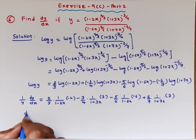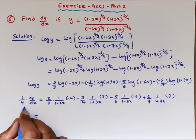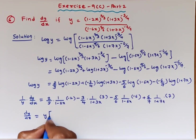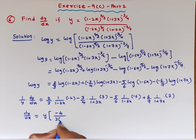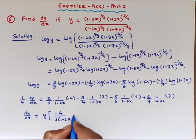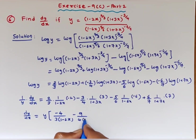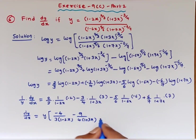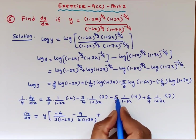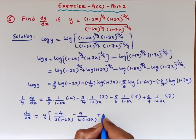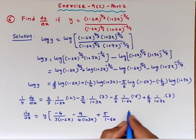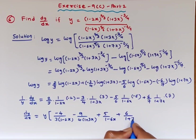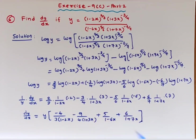So dy/dx equals y times of: minus 4 / [3(1 minus 2x)] minus 9 / [4(1 plus 3x)] plus 5/(1 minus 6x) plus 6/(1 plus 7x). The 6 and 6 cancel, the 7 and 7 cancel. This is the derivative of the given function, found using logarithmic differentiation.